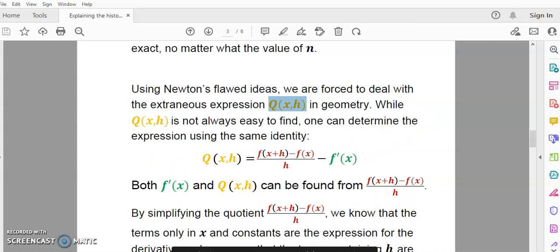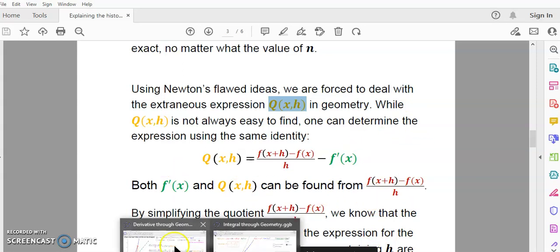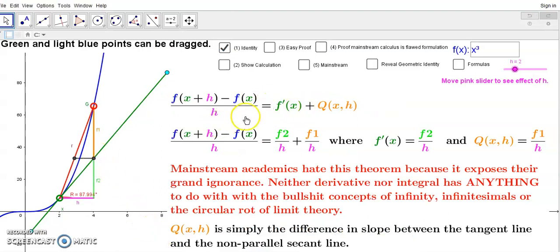Now in geometry some time ago I explained this geometric theorem to you and this is the identity and I prove to you that all the terms that do not contain h are the derivative.